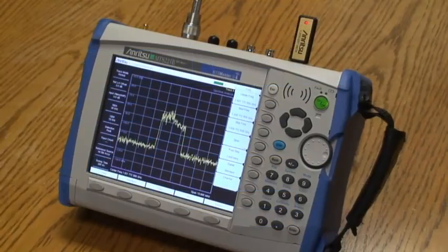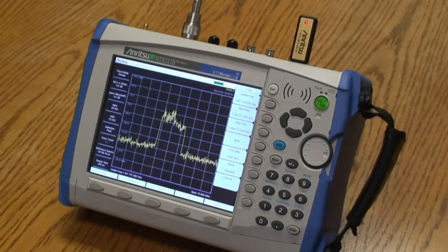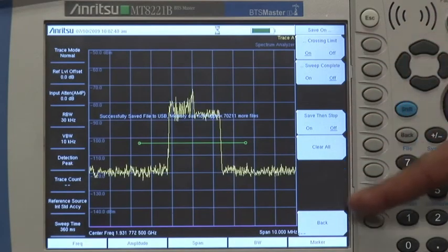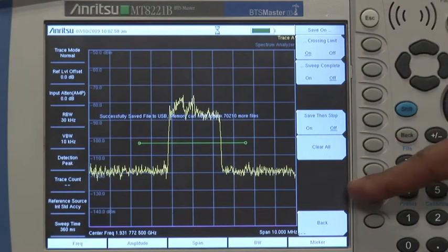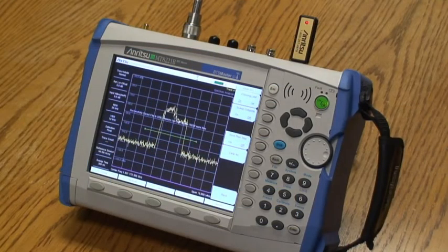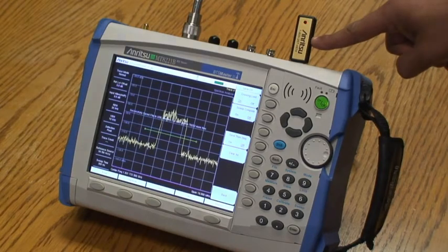Now you can with the spectrum analyzer in Anritsu Handheld Instruments. With Save on Event, you can set the spectrum analyzer to automatically save measurements which violate a preset limit line configuration, or just save all of the sweeps in a USB memory stick.